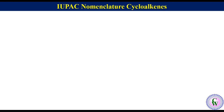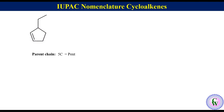Let's go through some examples for more clarification. Suppose we have to give the IUPAC name of this cycloalkene molecule. First we will find the parent chain. In this molecule, the 5-carbon ring is the parent chain, so it will be named as pent.